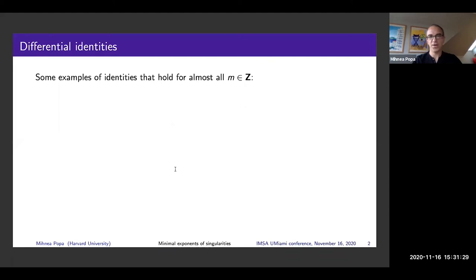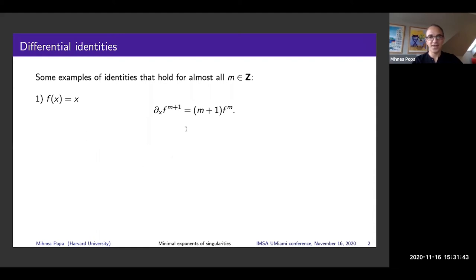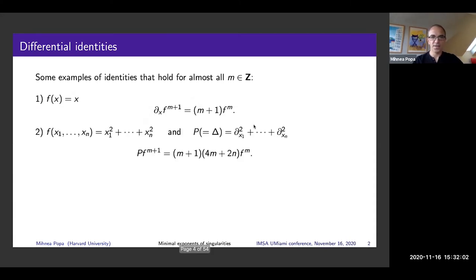These are identities satisfied by almost all integers m. The first one is completely uncontroversial: if I take the identity function f(x) = x, then if we take the derivative of f to the m+1, we get the expression (m+1) times f to the power m. Here's a slightly more interesting example: I can look at the quadratic cone — the sum of squares in n variables — and consider the Laplace operator, the sum of the squares of the partials. Applying this differential operator to f^(m+1), you obtain m(m+1)(4m+2n) times f^m.